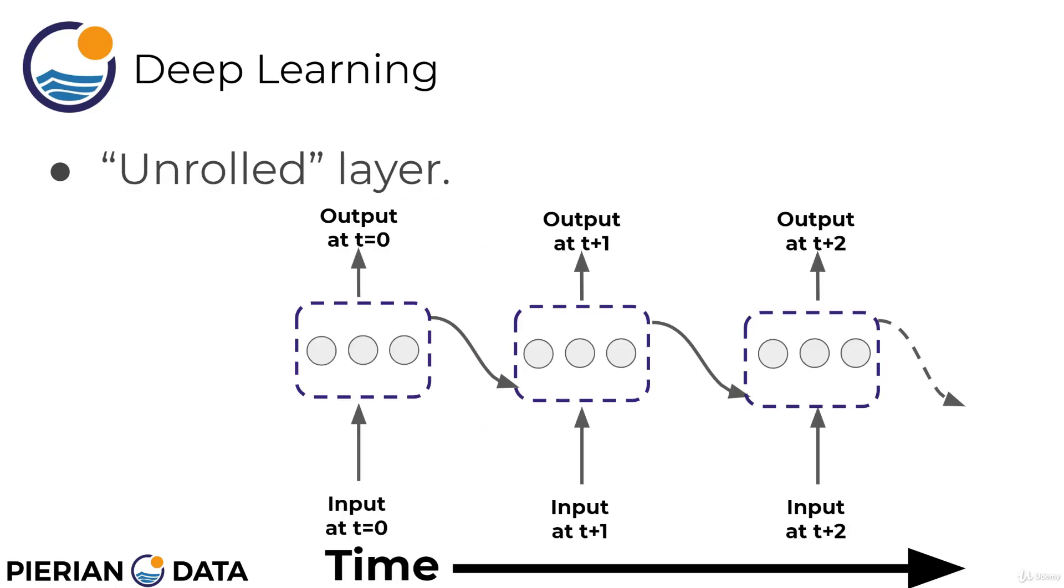So, then we can then unroll this layer in the same fashion. We pass an input at time t 0, pass it into the layer, get the output at time t 0, and then that output for that layer is then passed in to the layer at time t plus 1, t plus 2, and so on.